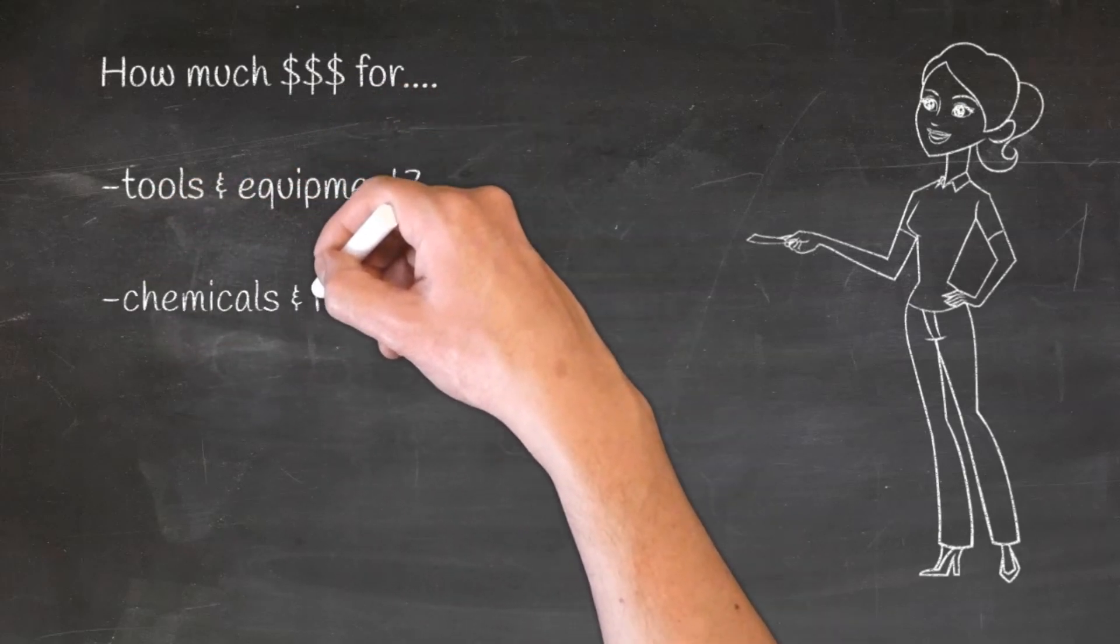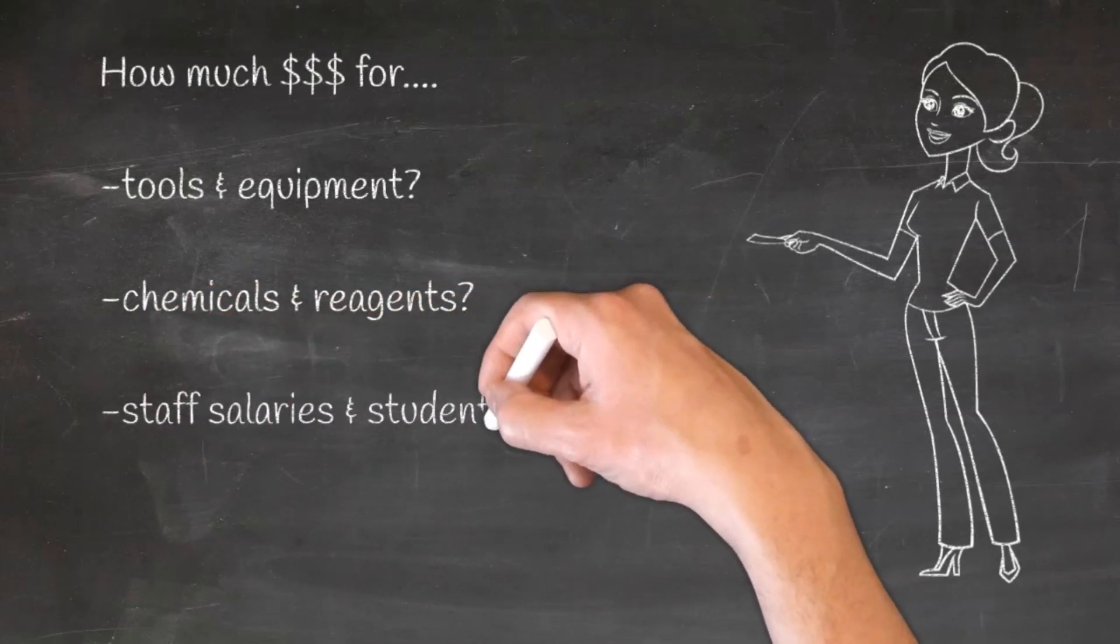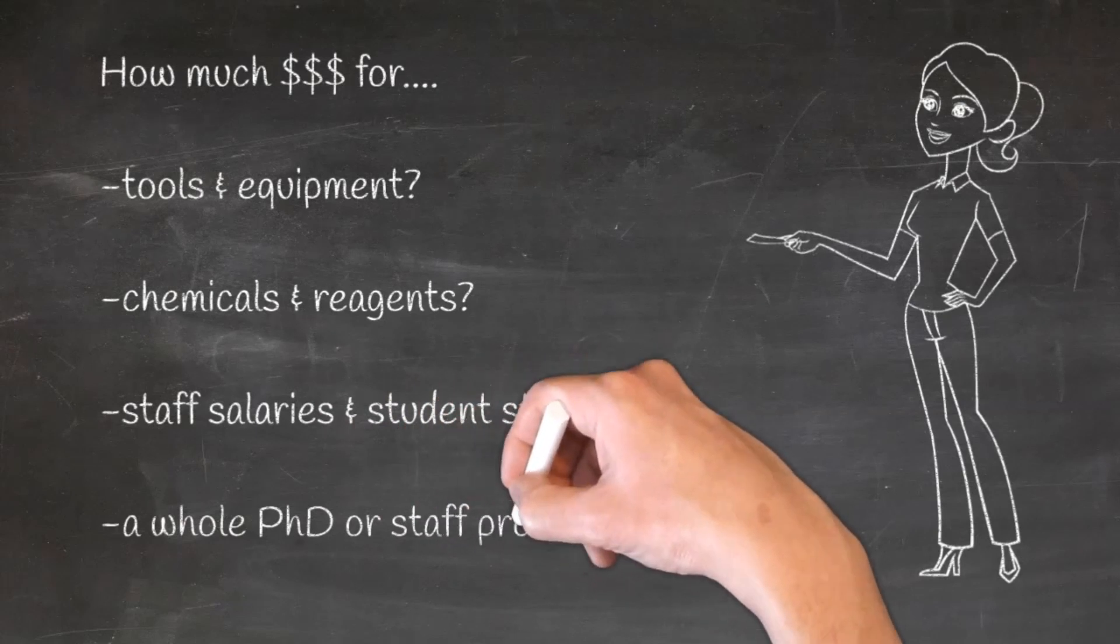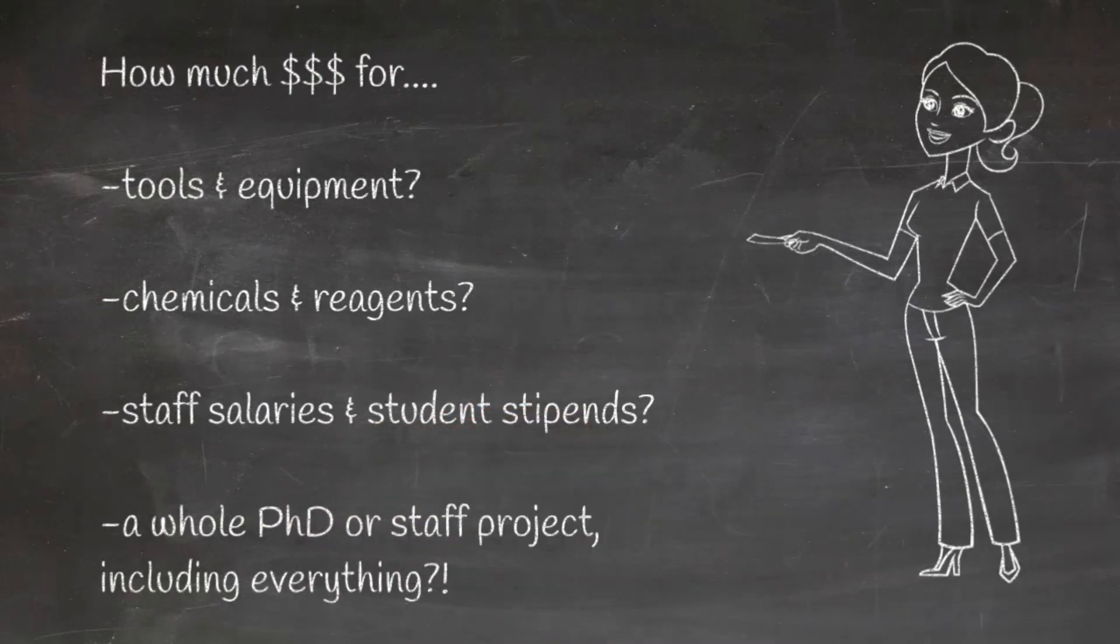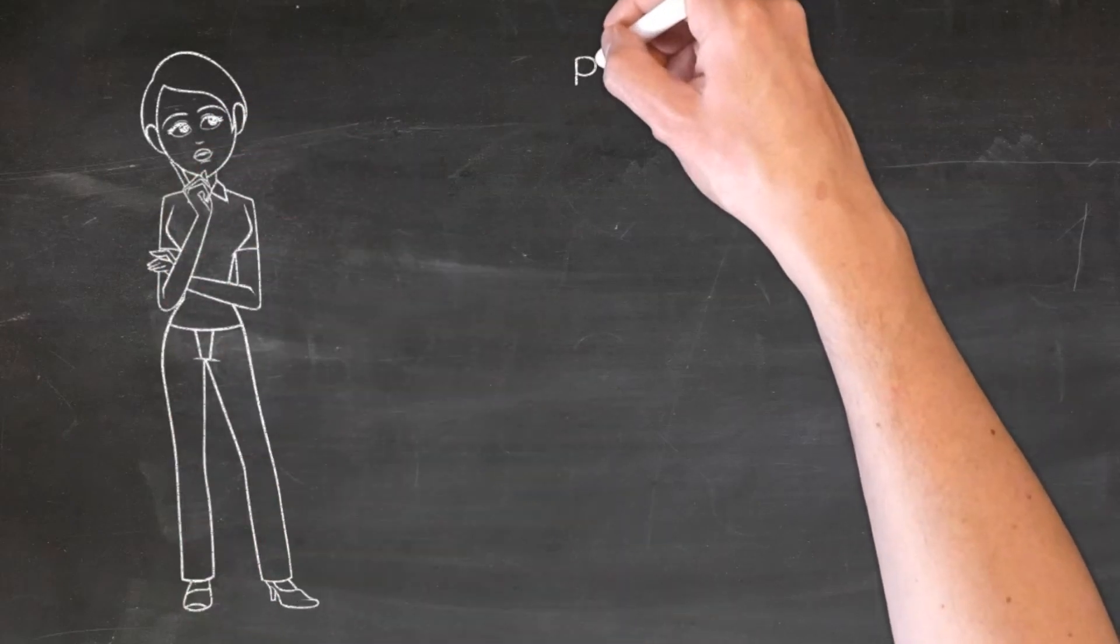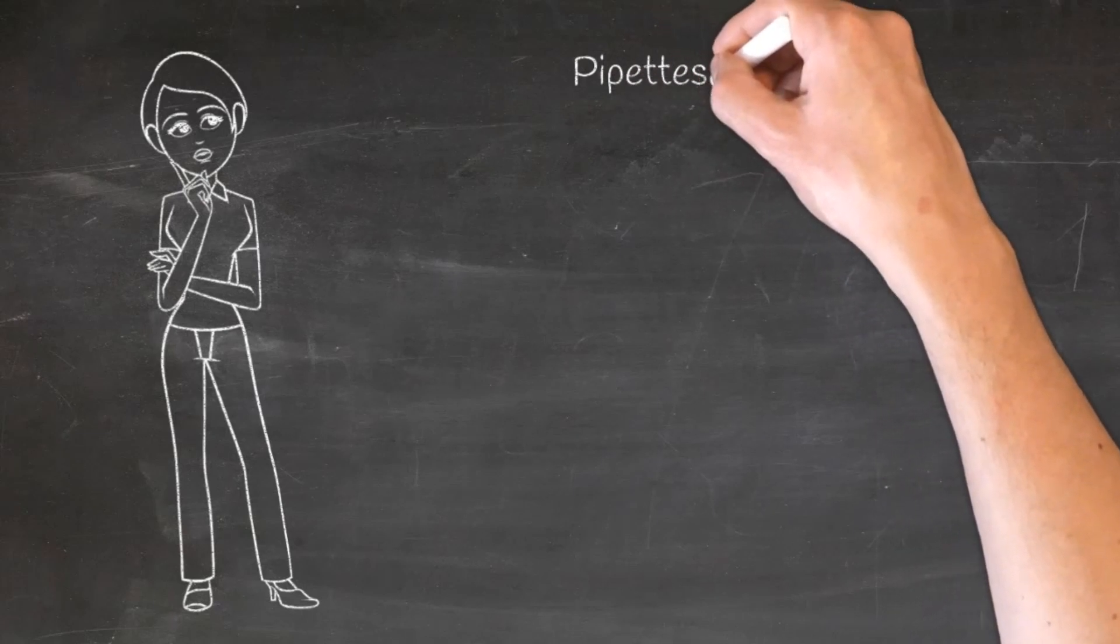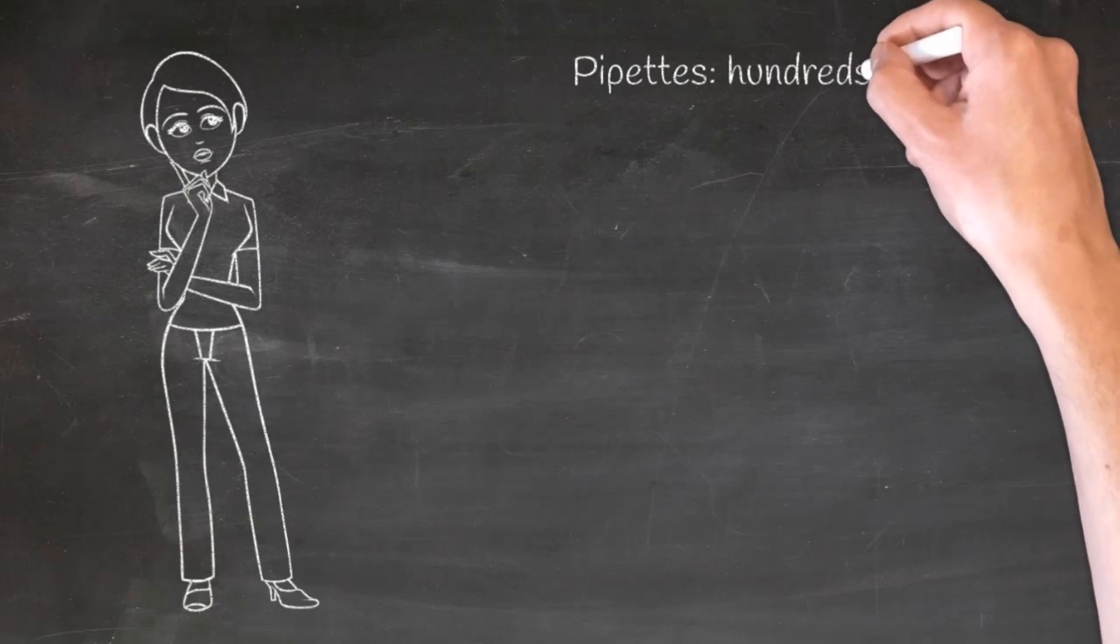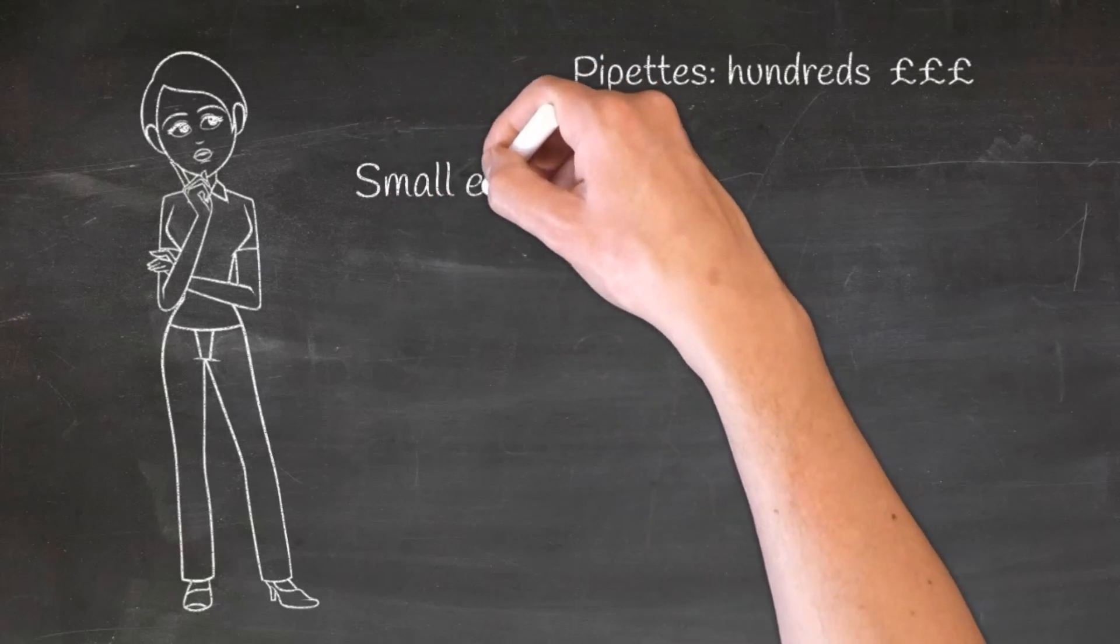Firstly, tools and equipment in the lab can obviously be quite expensive. We have to start with pipettes because those are absolutely essential for any lab-based cancer researcher. They're about as well used as a computer would be for an office worker. These are what are in our hands all day every day. And for a set of pipettes that you might have yourself or you might share with your lab mates, that would cost a few hundred pounds depending on the brand.